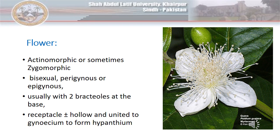In epigynous flowers, the ovary is inferior to the other three parts. Here, the thalamus encloses the ovary inside it and the other three whorls — which are sepal, petals, and stamens — are located above it. Whereas in perigynous flowers, the ovary is in the center and all four whorls are almost at the same level. The flowers usually have bracts. The flowers bear a hollow receptacle, which is fused to the gynoecium to form a hypanthium.